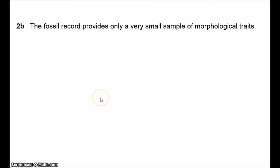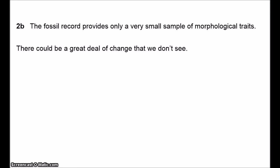The fossil record provides only a very small sample of morphological traits — only the harder parts of an organism tend to be preserved. If you're looking at animals, you're only going to find the skeletons. This means there could be a great deal of change we simply don't see. If we judge a species by changes in its skeletal form, this could give us the illusion of stasis, because various other parts might undergo significant change that just isn't recorded.